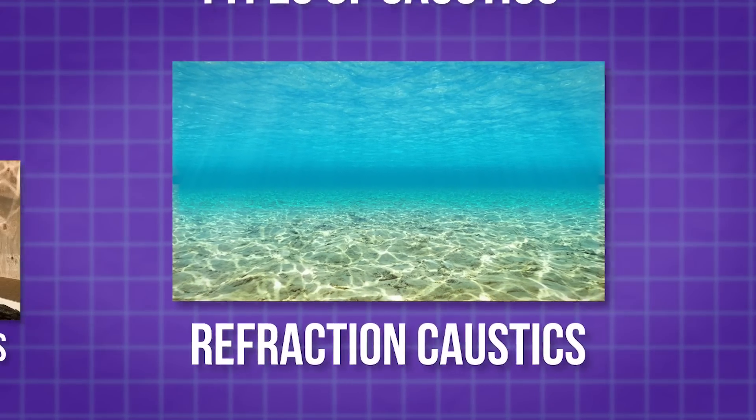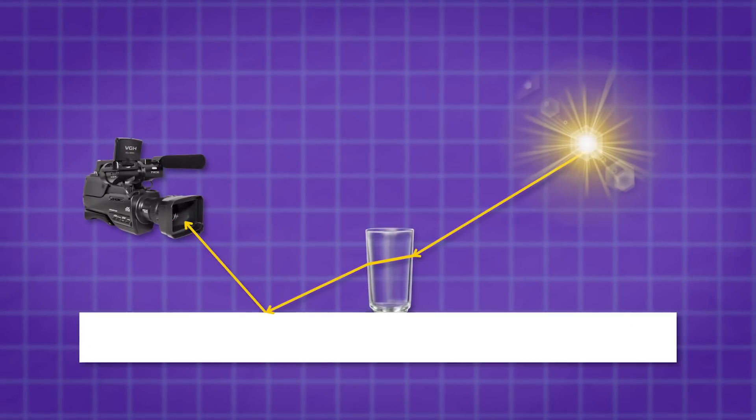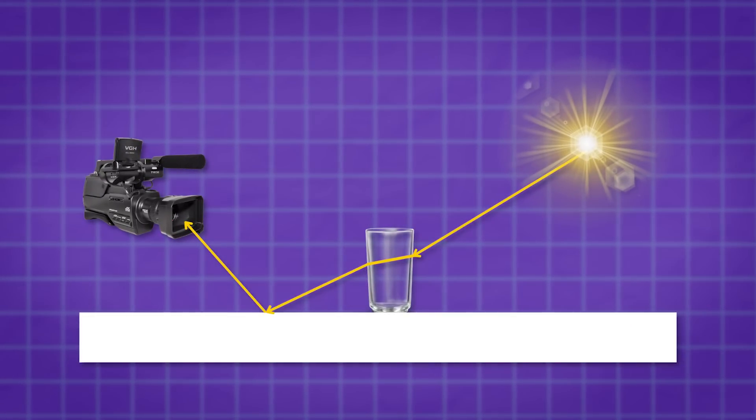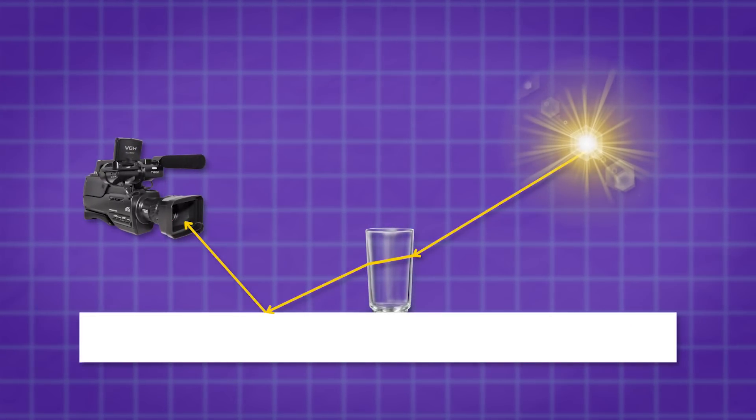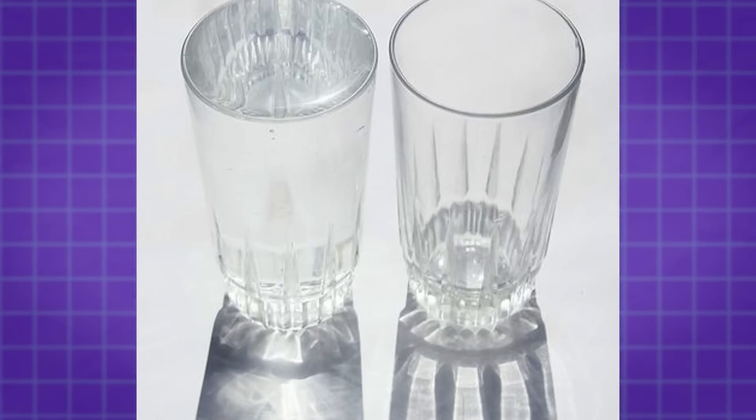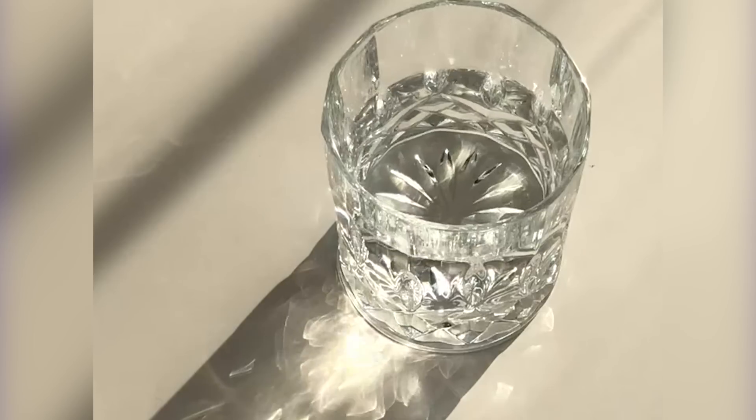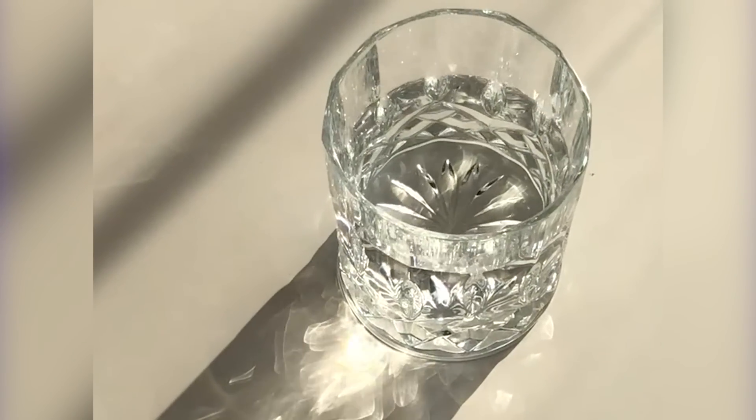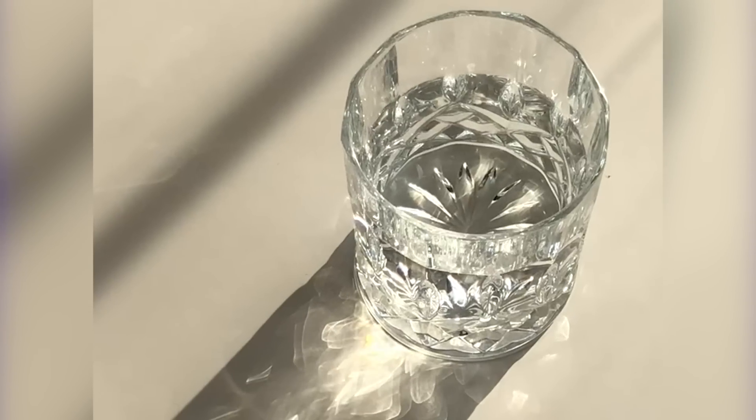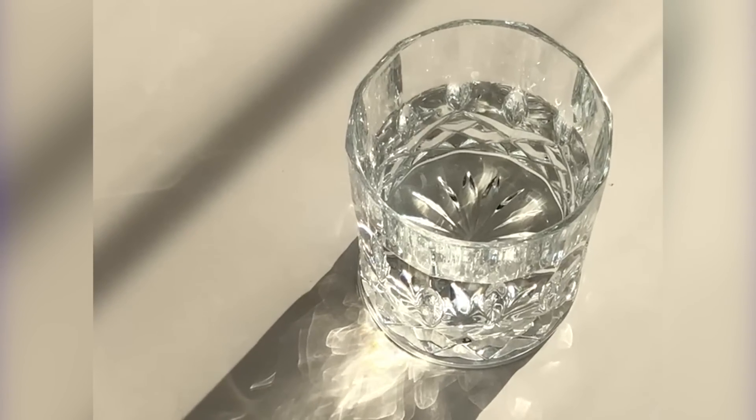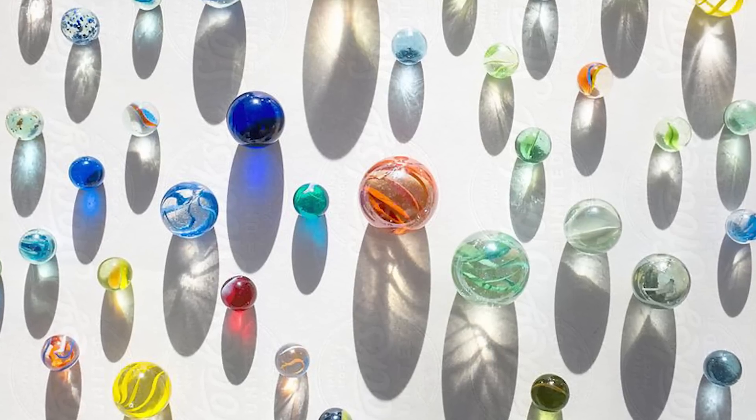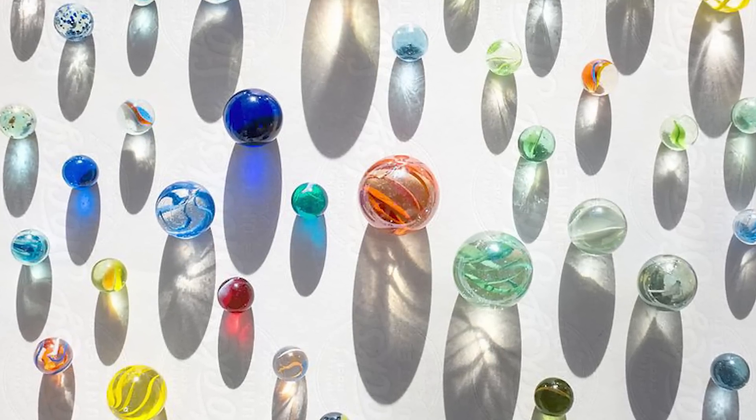On the other hand, we have refraction caustics. These occur when light rays pass through a transparent material and bend or refract, creating patterns of light and shadow. For instance, when light passes through a glass of water, it can create intricate patterns on nearby surfaces. And this phenomenon also happens with translucent materials.